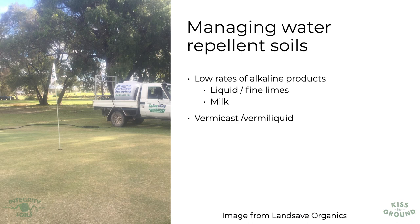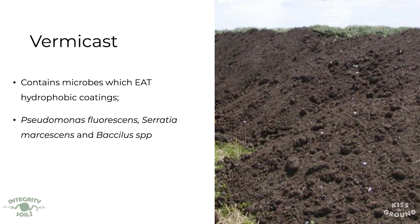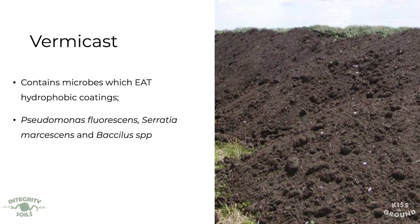So how do we manage water repellency? We've found that low rates of alkaline type products — either liquid or fine limes, or even applications of milk at two to four gallons per acre — will help to break those layers up. We also find that vermicast or vermi liquids, which are byproducts of compost worms, can be really powerful in managing water repellent waxy coatings, in part because vermicast contains microbes which eat those hydrophobic coatings. Pseudomonas fluorescens, Serratia, and Bacillus species can all break down some of these waxy coatings. We use these as well as humic acids to help break down that water repellency and enable water to start moving back through the profile.